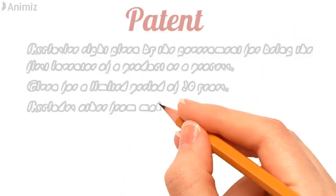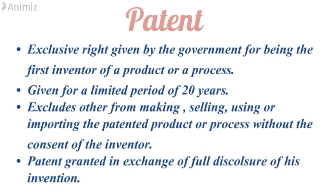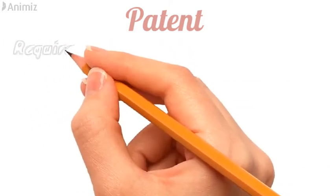Now let's understand what a patent is. A patent is an exclusive right given by the government for being the first inventor of a product or a process. It is given for a limited period of 20 years from the date of filing. It excludes others from making, selling, using, or importing the patented product or process without the consent of the inventor, and a patent is granted in exchange for full disclosure about the invention.